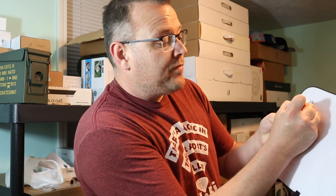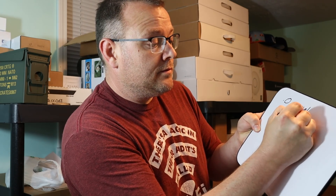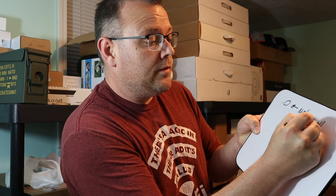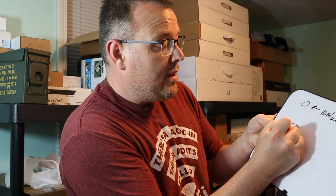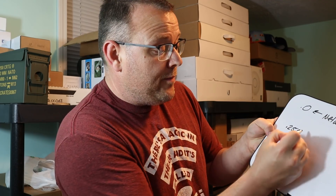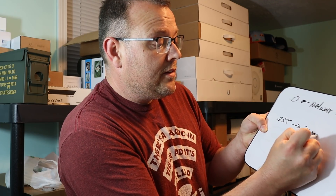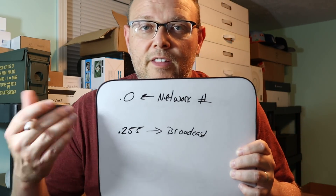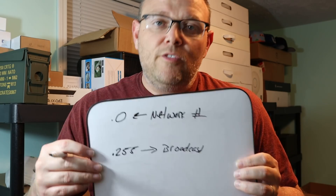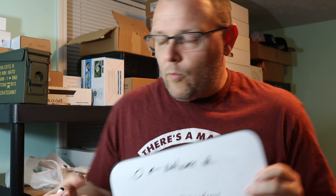Because that dot-zero address is the network number, and the dot-255 — because remember we start from zero — that is our broadcast. So the dot-zero is the network identifier, the network number, and the 255 is our broadcast. We cannot use those.